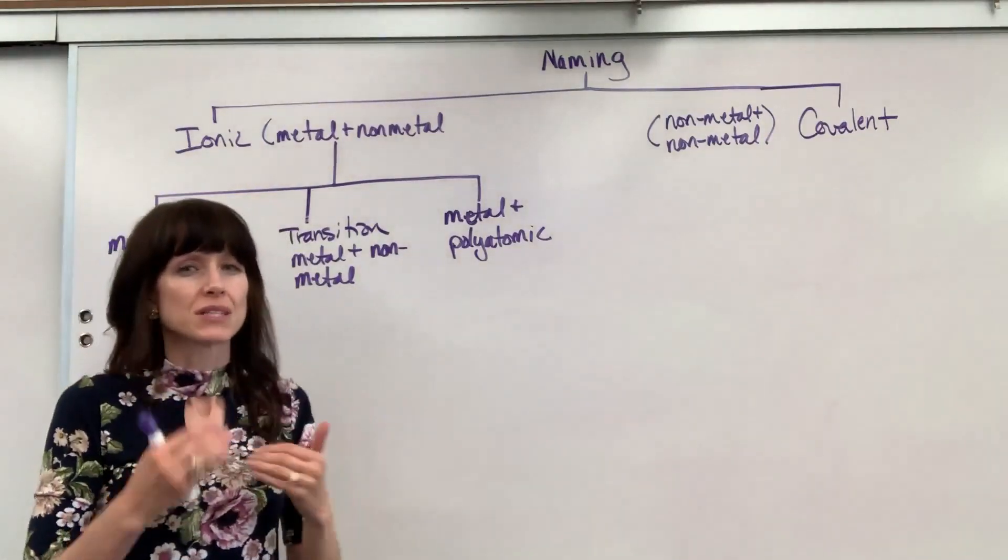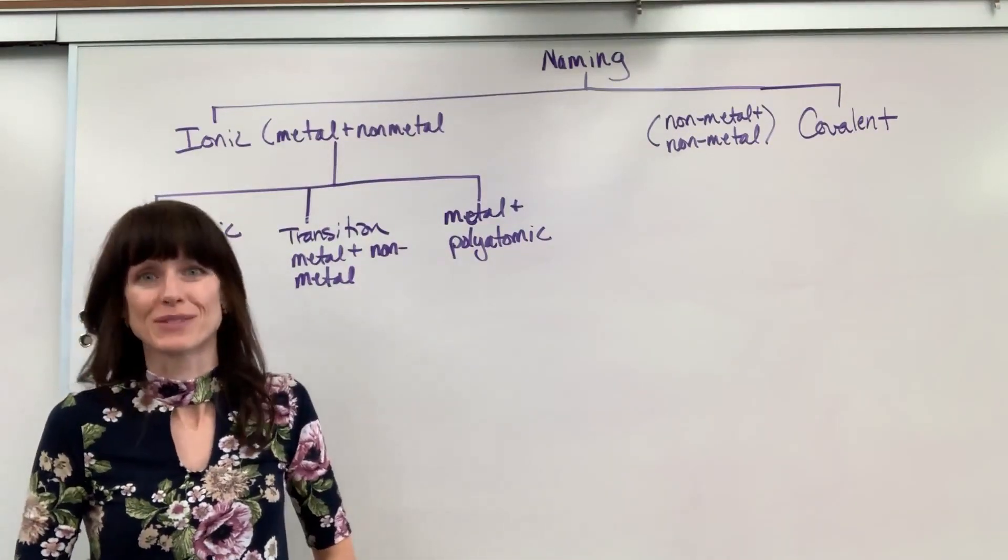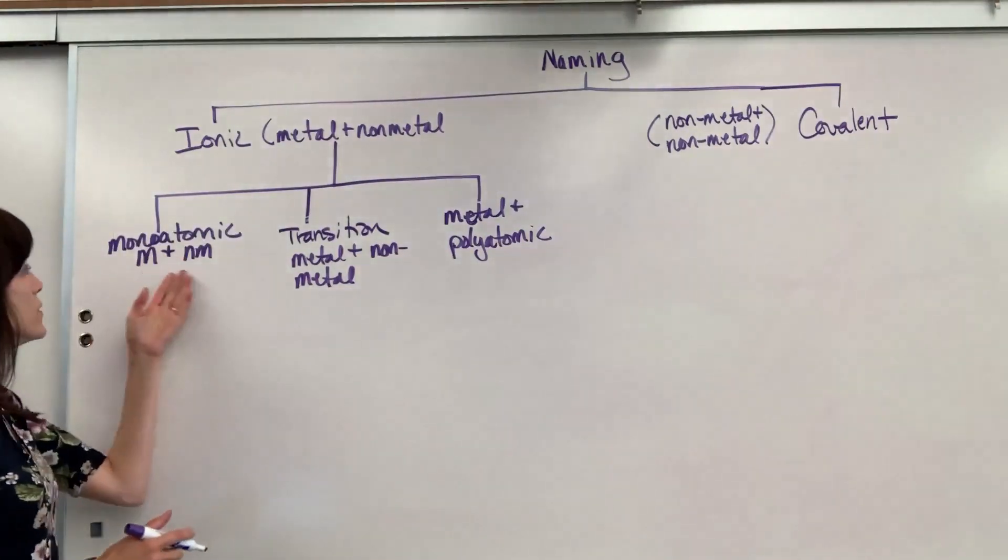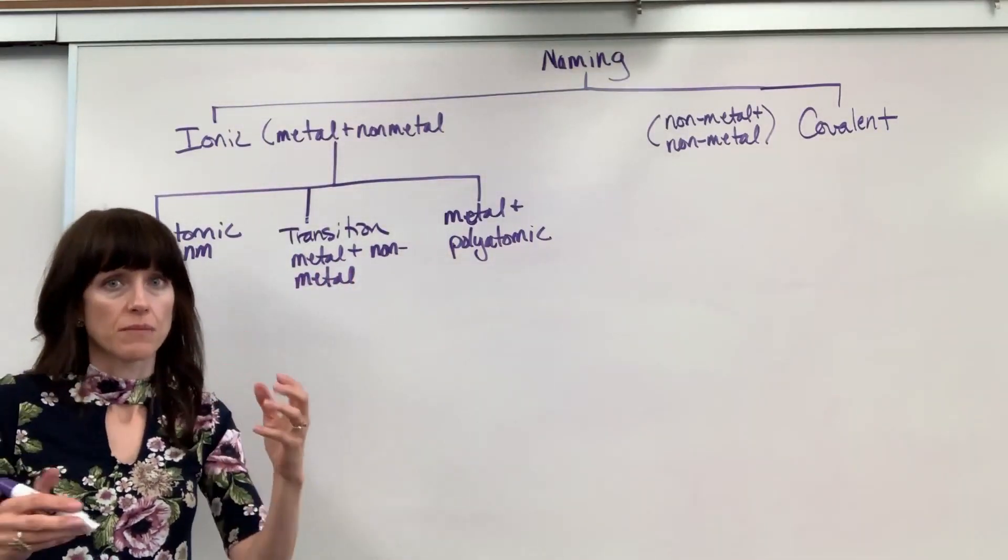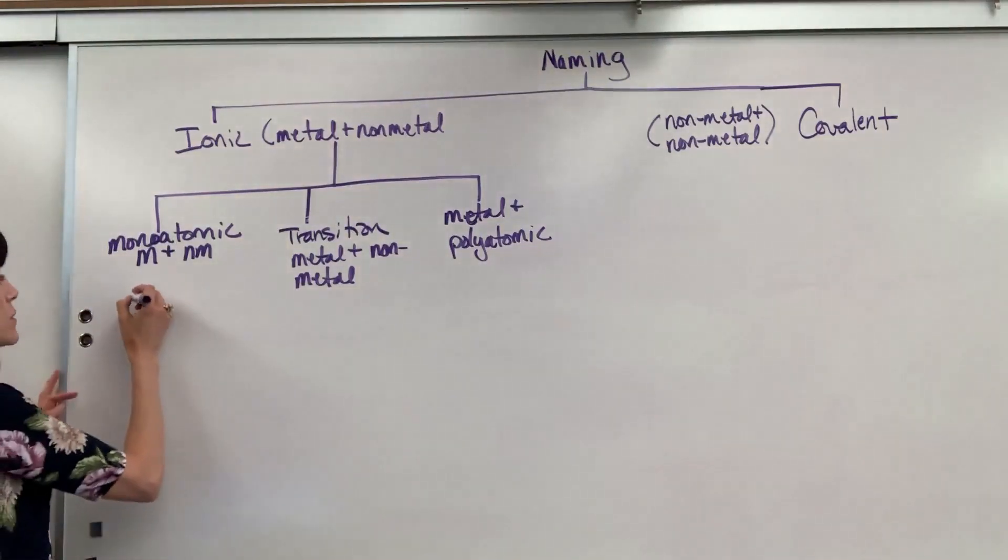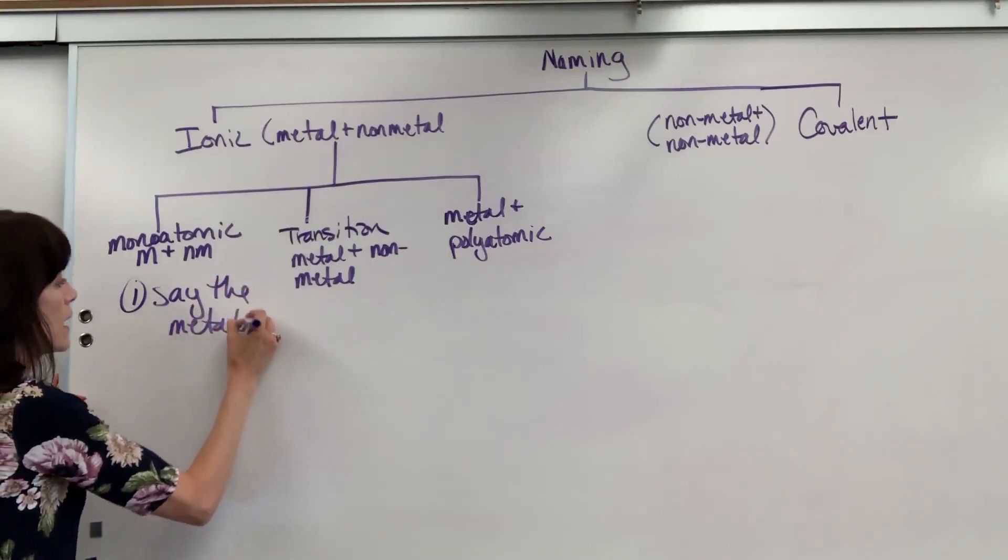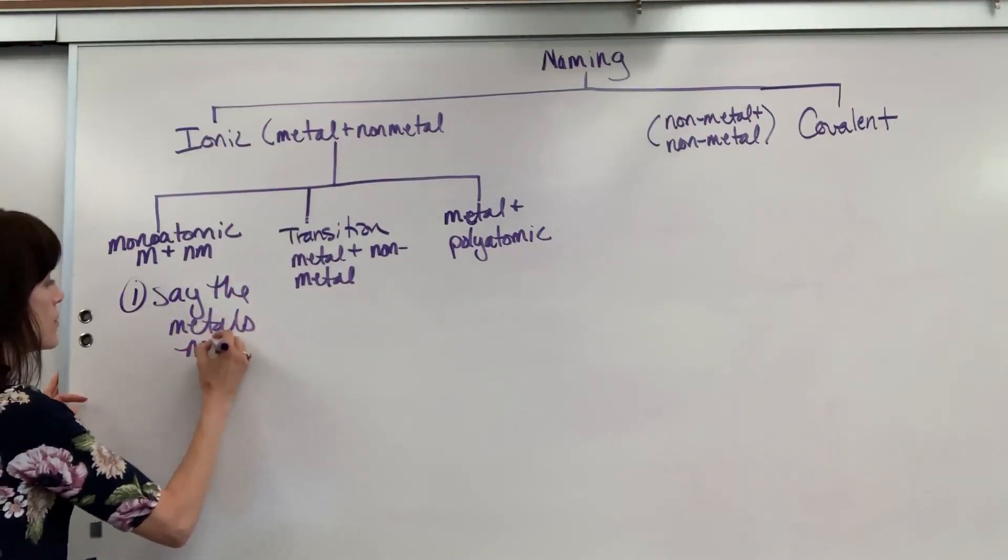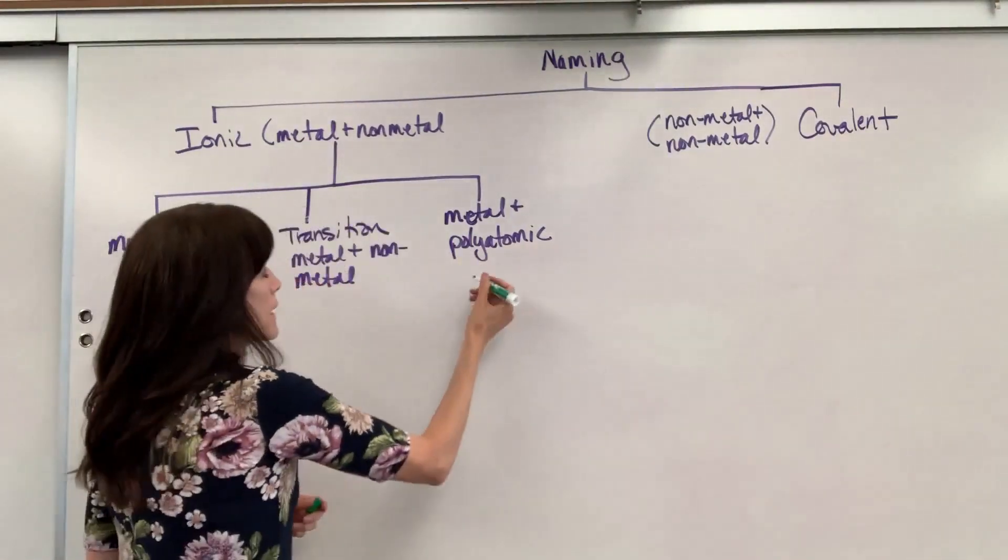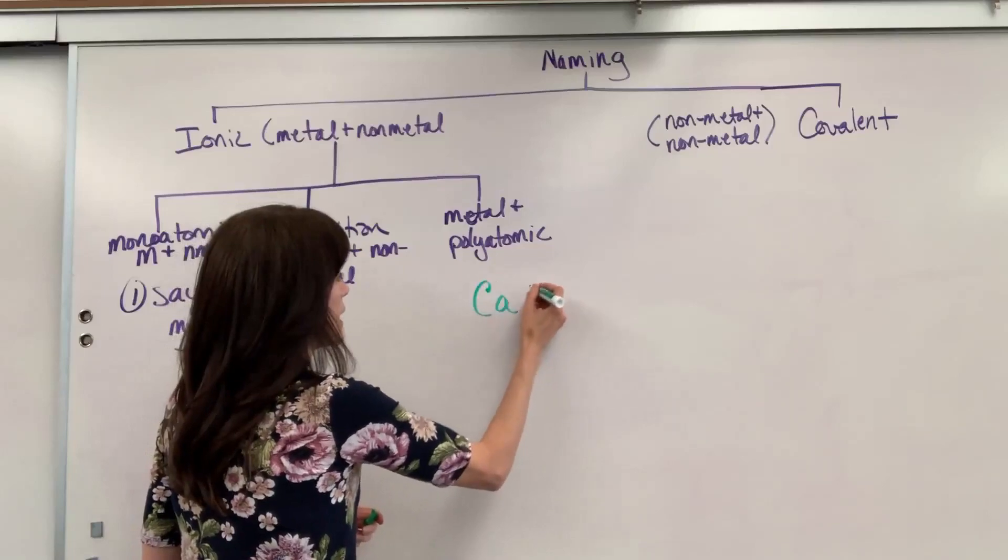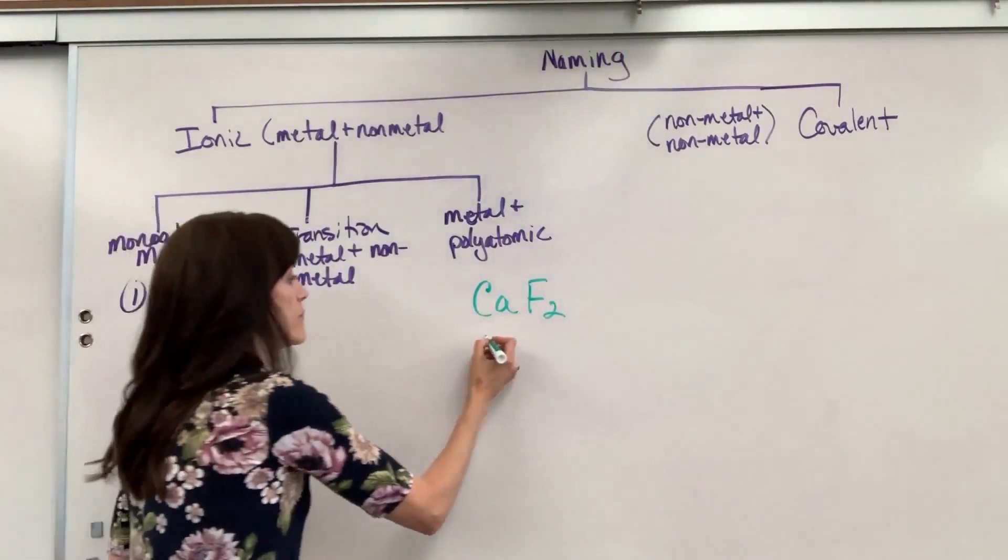There are really three situations you're going to run into when naming. Here's the first one and the most basic: when naming monoatomic ions that come together, a metal and a non-metal. First thing you do, number one, say the metal's name. I'm going to use an example. Let's take CaF2. First, I say the metal's name: calcium.